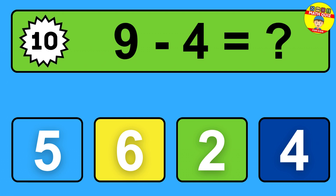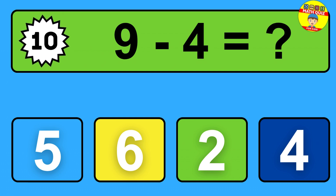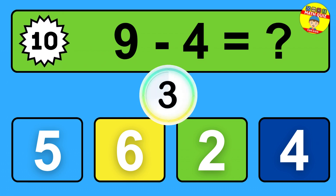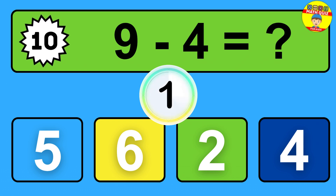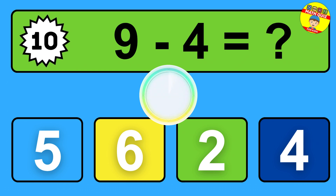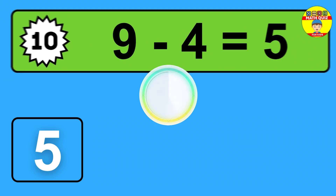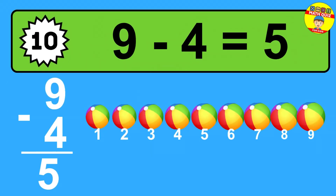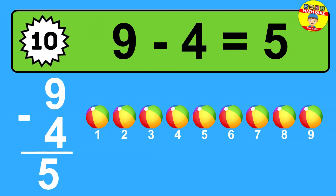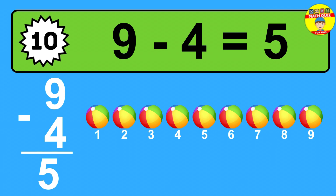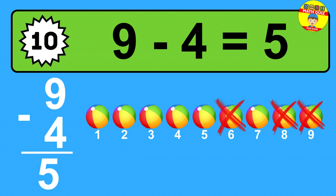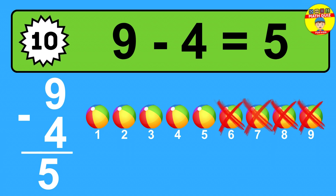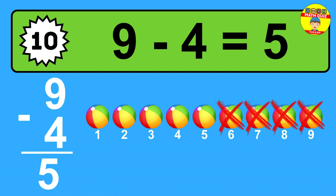Question ten: nine minus four equals what? The answer is nine minus four is five. Let's count it: one, two, three, four, five.